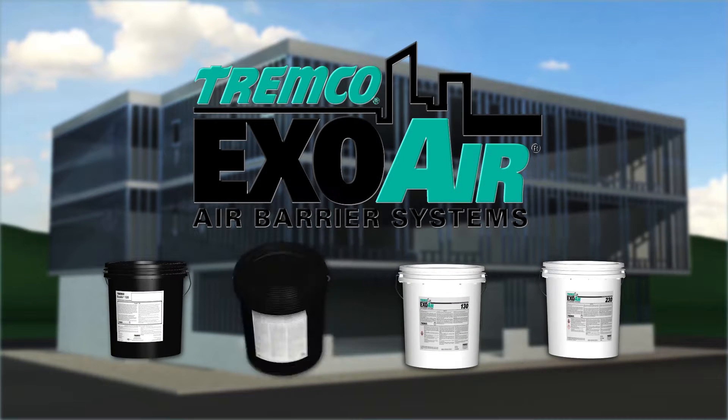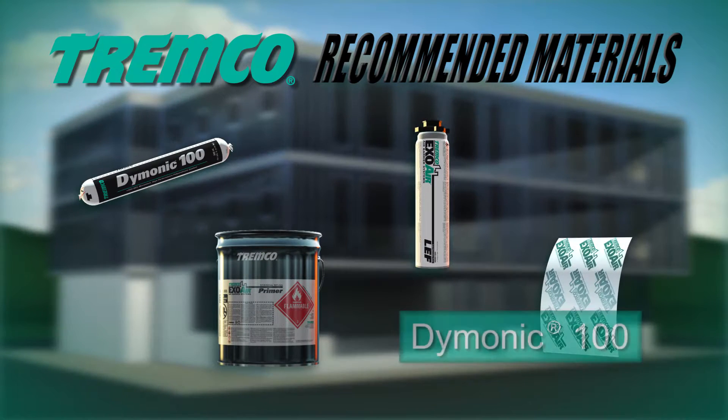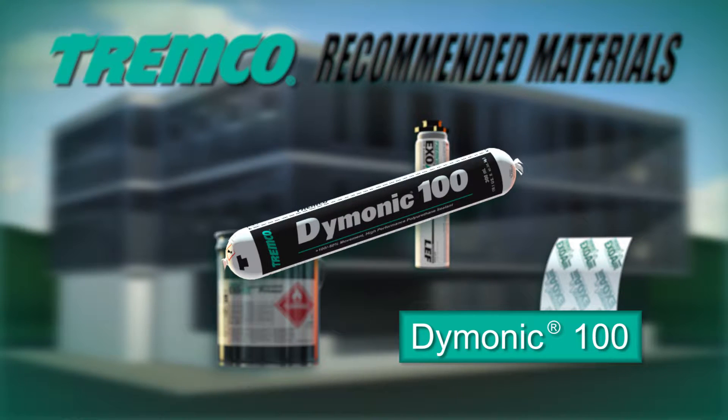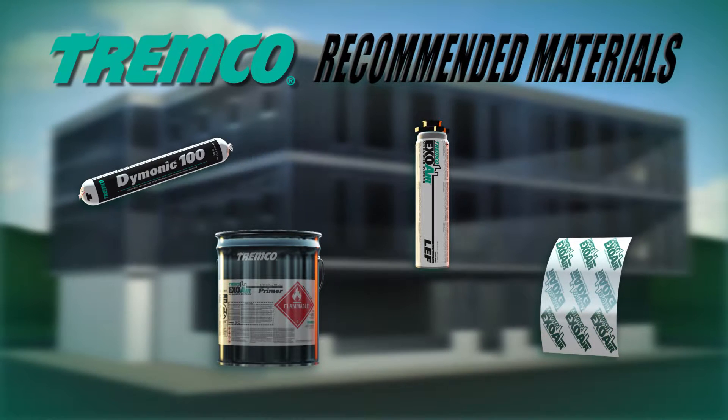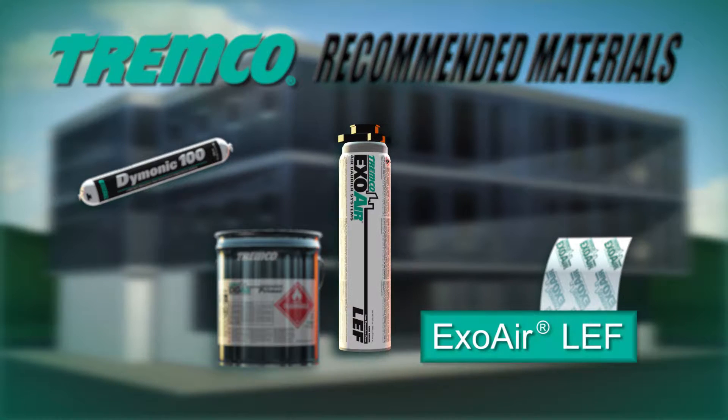The following products are recommended for use with the ExoAir 220 system. Dimonic 100 is a one-part moisture-curing gun-grade polyurethane sealant used for sealing cracks, control joints, and for use in forming cans. ExoAir LEF is a single-component, CFC-free, all-season, high-performance gun-grade polyurethane foam that performs as a thermal barrier.